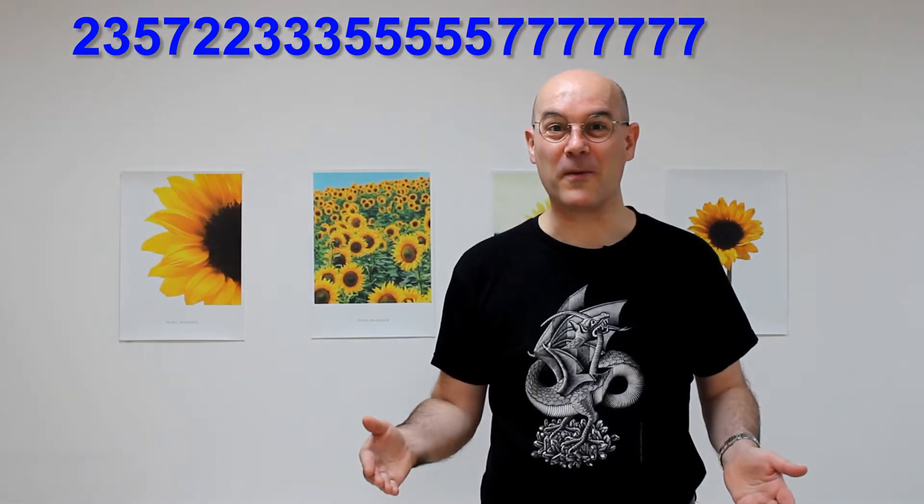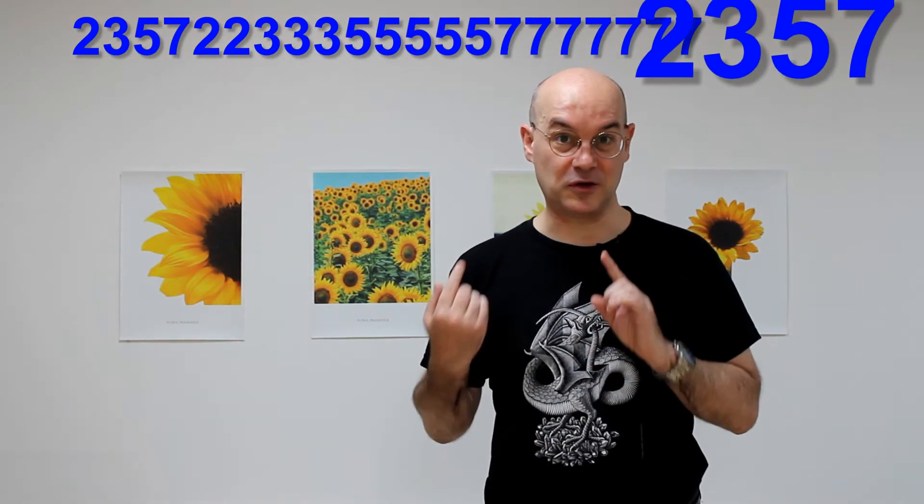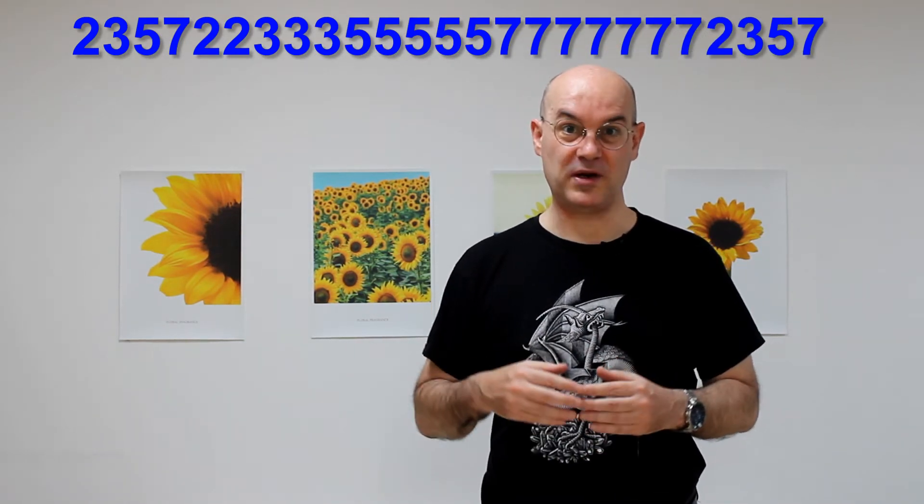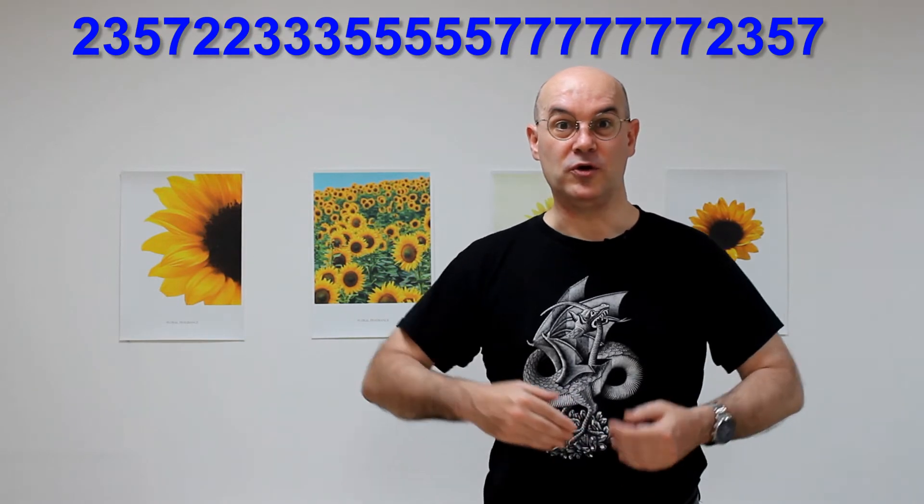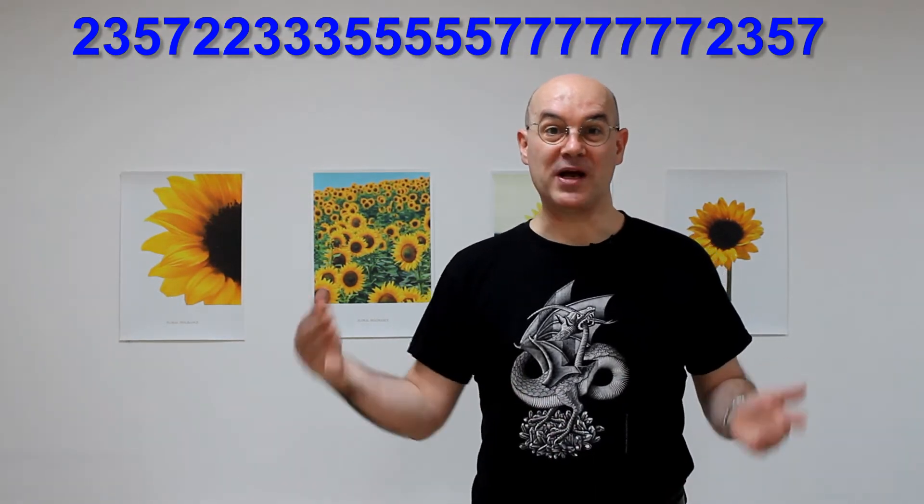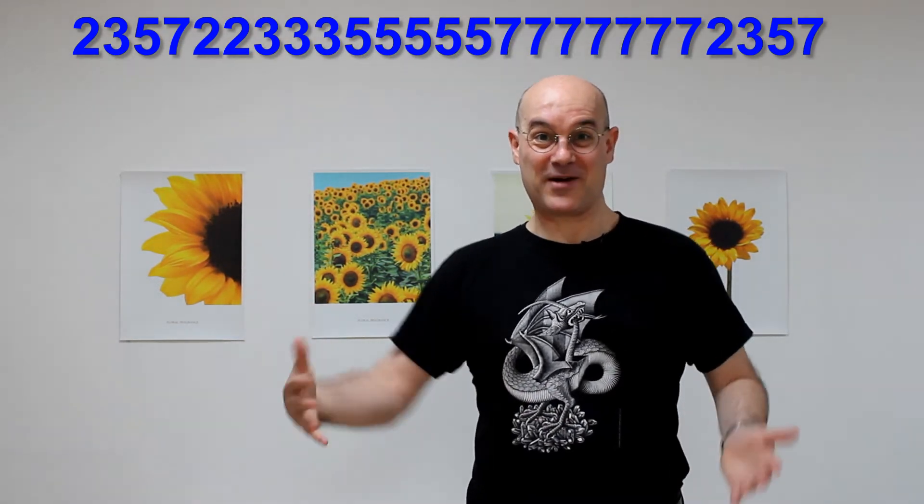But it's not over, because if you write again at the end of that huge number, 2, 3, 5, 7, you get now a 25-digit prime number that you can remember easily.